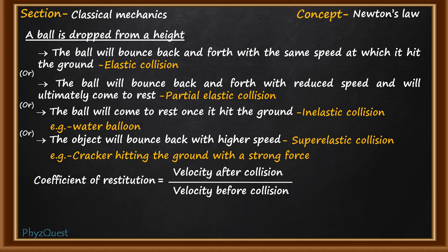In this given question, we are talking about a single object colliding with the ground. When two objects collide with each other, instead of velocity, we have to use the relative velocity before and after collision. Here, in this question, we are not given any data regarding velocity — we are given height.